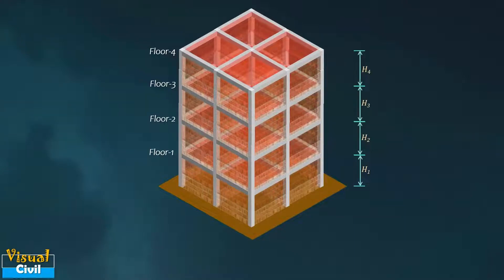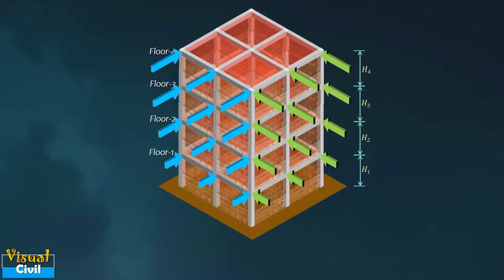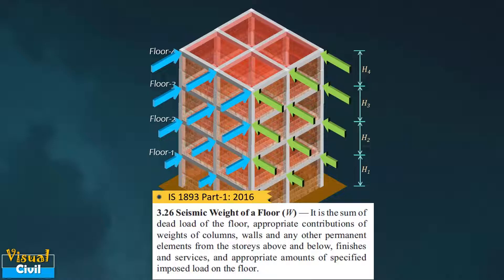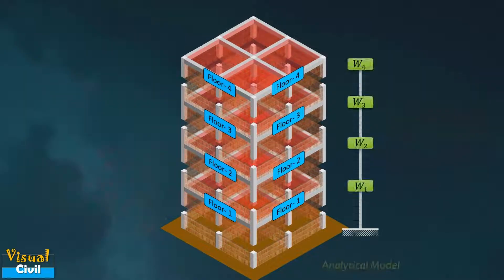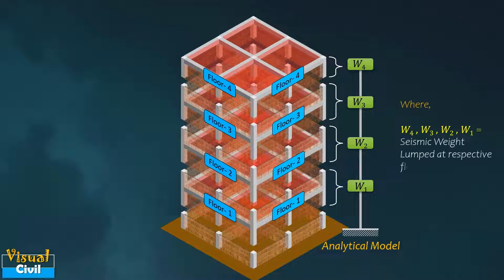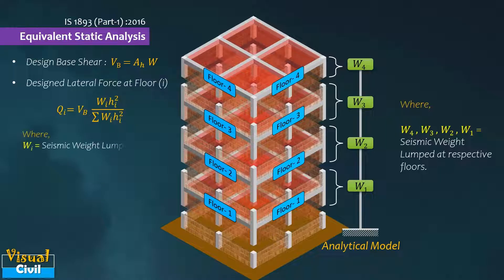The seismic forces acting on each floor of the building are calculated based on the seismic weight lumped at the floors. As per the definition given in IS 1893, the seismic weight of a floor is the sum of dead load of the floor, appropriate contribution of the columns, walls, and any other permanent elements from the stories above and below, and appropriate amount of imposed load on the floor. These seismic weights are used to calculate the base shear and lateral forces on each floor in equivalent static analysis method.